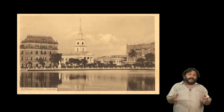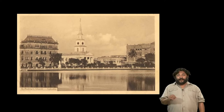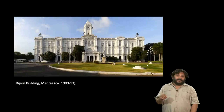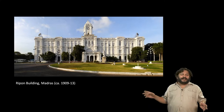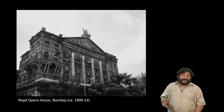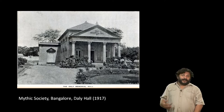By the time Bombay is on the rise in the 1850s and particularly the 1860s with the boom in opium and cotton caused by the American Civil War, we come to something that is Victorian Neo-Gothic. A last example of the widespread reach of neoclassicism are the Ripon Buildings, built quite late in the early 20th century in Chennai, then called Madras. The Opera House in Bombay is a kind of mannerist take on the neoclassical, and the Mythic Society in Bangalore is also a very late example of a neoclassical facade.